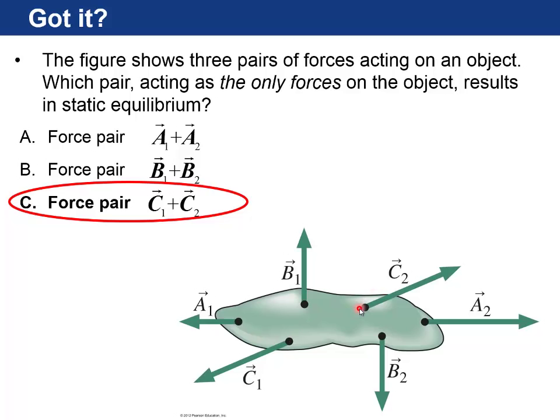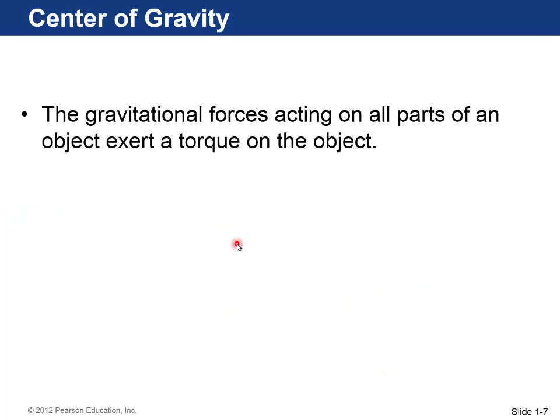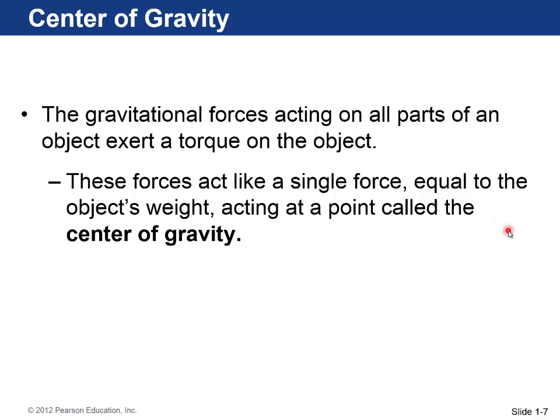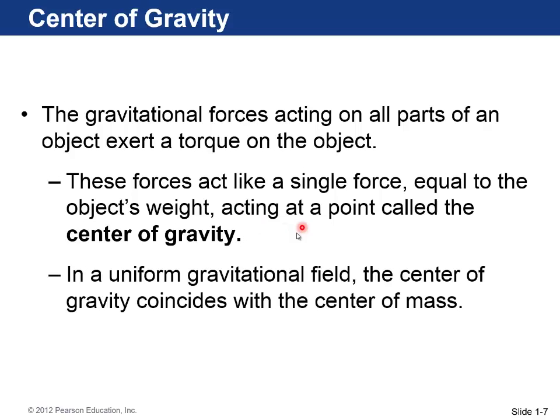Center of gravity. The gravitational force acts on all parts of an object, and each little part of the object has a little gravitational torque. These forces, if you integrate, all act like a single force equal to the object's weight acting at a point called the center of gravity. In a uniform gravitational field, like here near the surface of the Earth, the center of gravity coincides with the center of mass. We did that implicitly when we had the drawbridge in the previous example. We took the gravity as if it was acting right at the center of mass of the drawbridge.